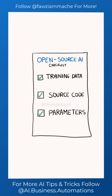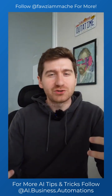Many models are advertised as open source, but they only reveal the model's parameters without exposing their training data or their code. The more accurate term for these models is open weight. These models are still free to use but are much harder to study and modify.